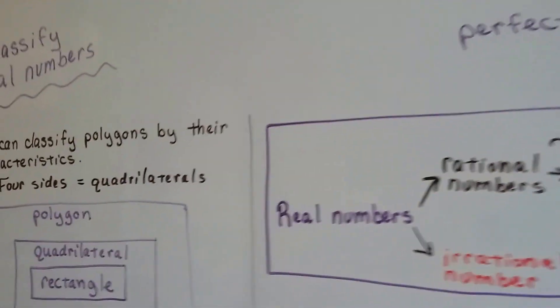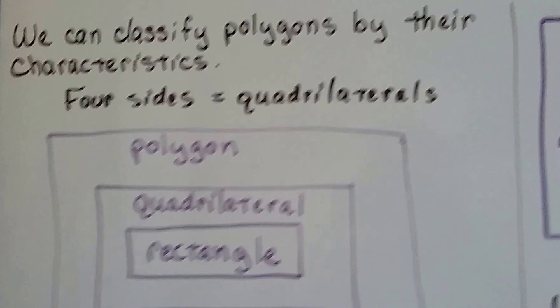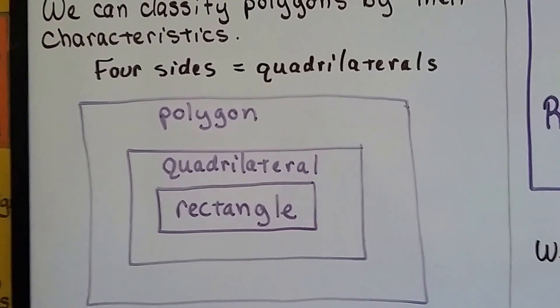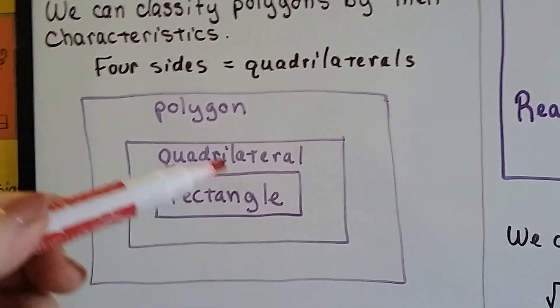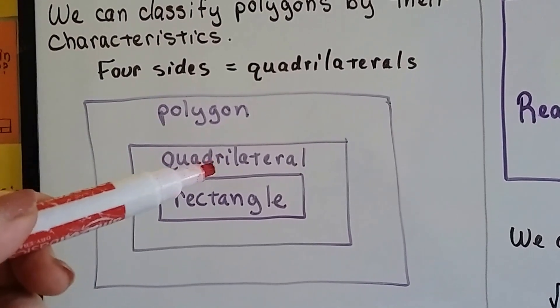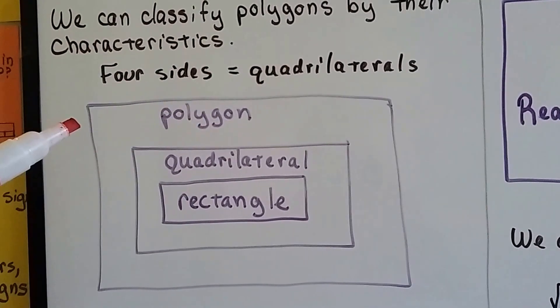So, we can classify polygons by their characteristics. If it's got four sides, we know it's a quadrilateral. So, a rectangle is a quadrilateral and a quadrilateral is a polygon. We've classified it.